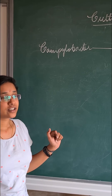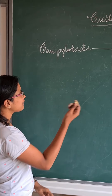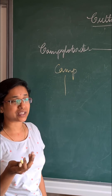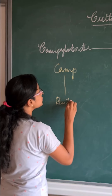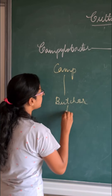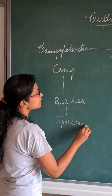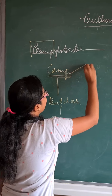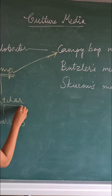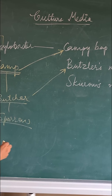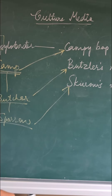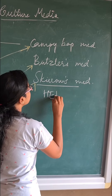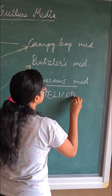For Campylobacter, remember the mnemonic: you went to camp and there was a butcher trying to kill a sparrow. Here, 'camp' indicates Campylobacter and Campy medium, 'butcher' indicates Butzler media, and 'sparrow' indicates Sclerous media. For Sclerous medium, Helicobacter is also cultured.